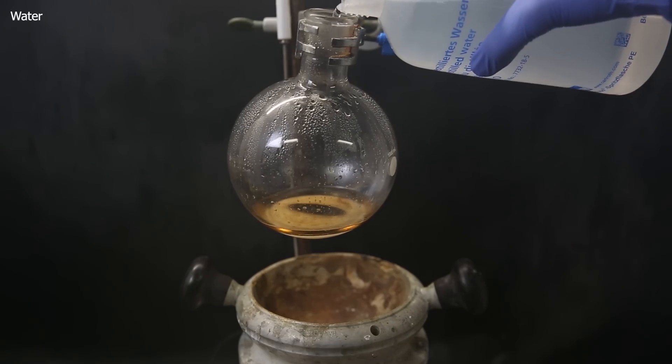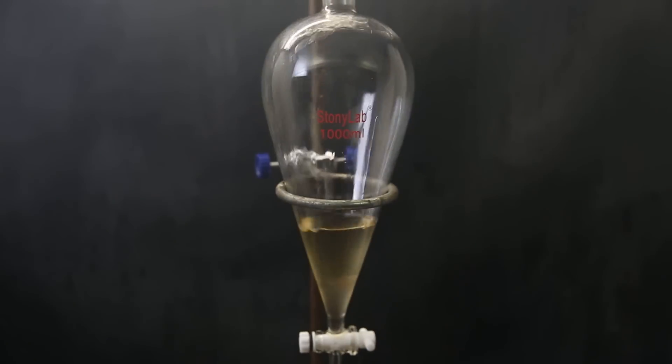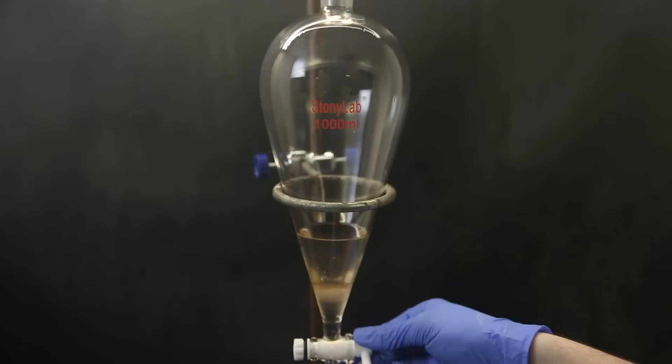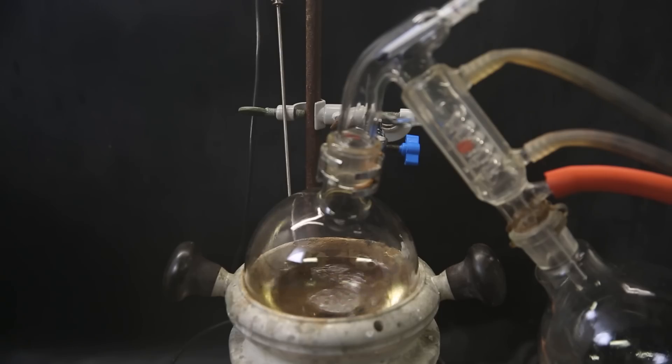So I partition it between more water and ethyl acetate to get rid of the salts and extract out the product. I separate the layers in the separatory funnel and extract the water phase once more with ethyl acetate. I then dry it again with sodium sulfate, filter it, and distill off all of the solvent.